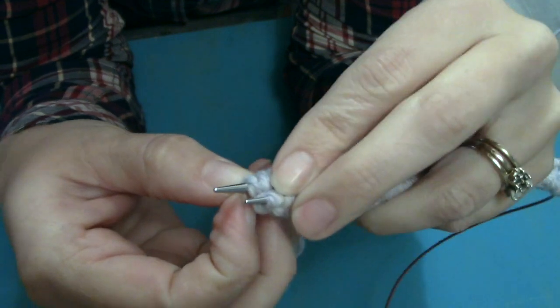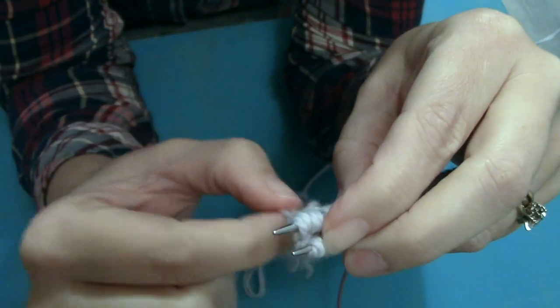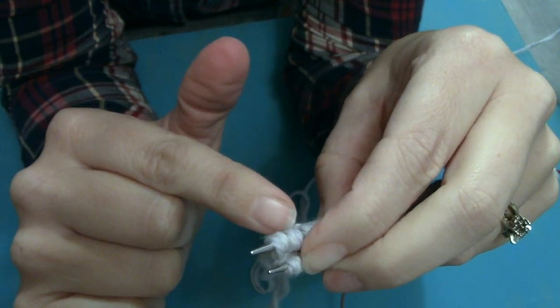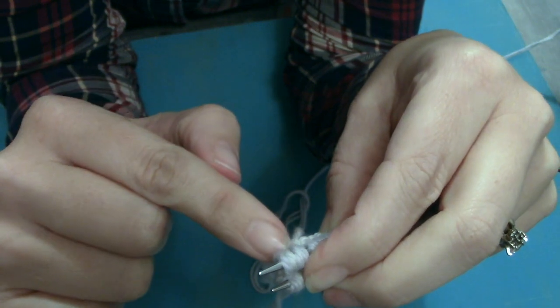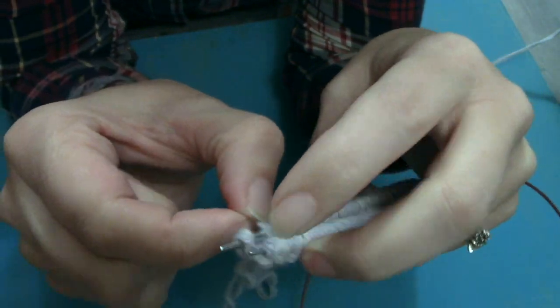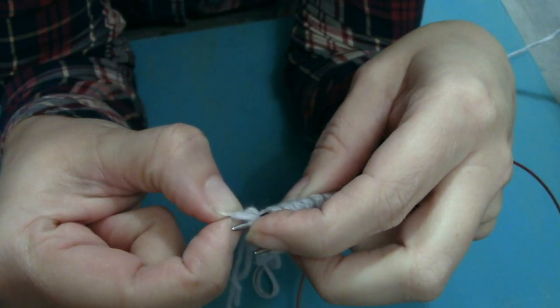Now I'm going to take the loop that's now the second one in but was the last stitch that I cast on and we're going to pass that over the top of the stitch that we just put on this needle and drop it off the needle.